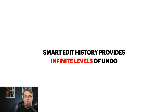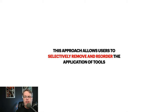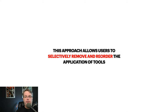This also answers one of the upcoming questions. The approach allows the user to selectively remove and reorder the application of tools. In Luminar AI, you can't do that — everything gets processed in the order that Luminar AI dictates. In Luminar Neo, you can process things in the order that you want. So you may want to do your sharpening at one point, your black and white conversion at another, and apply a lookup table at yet another point. You can decide that order creatively, which is one of the big changes that affects both performance and your control over the editing process.